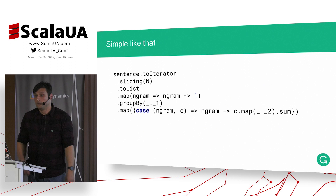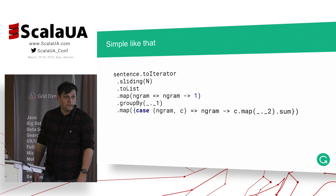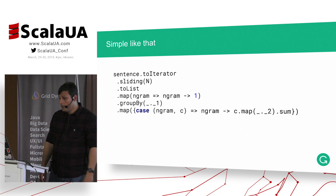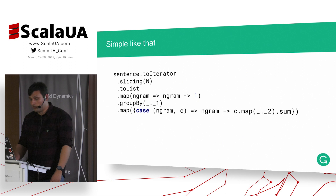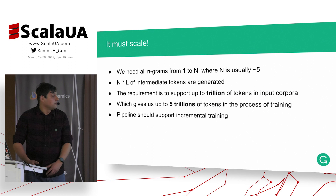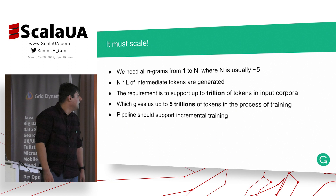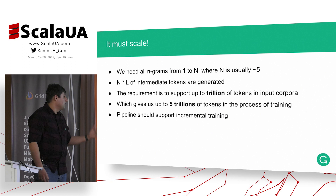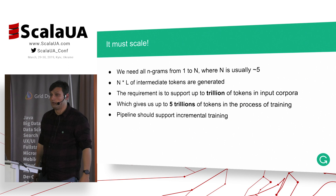With this code we can actually compute frequencies or counts of n-grams. But there's a little issue — not with the code itself, the code is correct — but this approach doesn't scale for large datasets or large corpora. In our case we need all n-grams with rank from 1 to n, where n is usually close to 5, and when we generate these tokens we have a lot of intermediate data — n multiplied by l, where l is the size of the corpora.